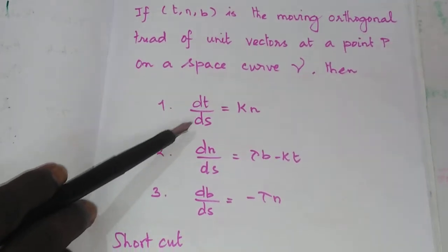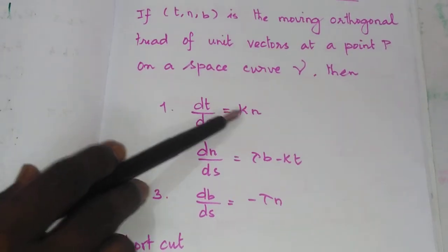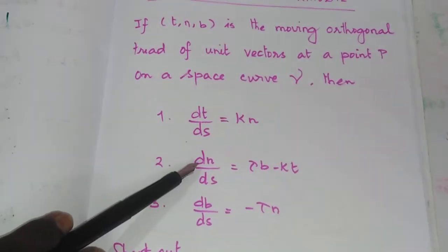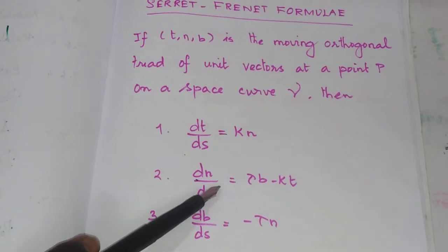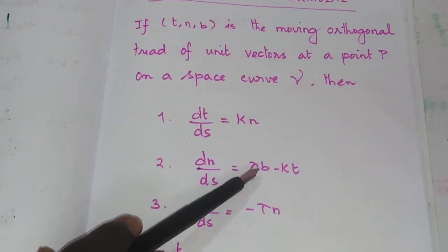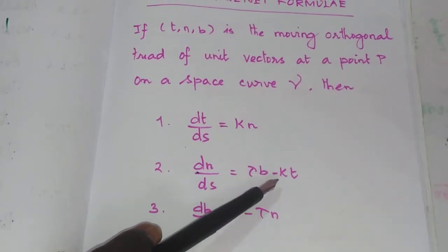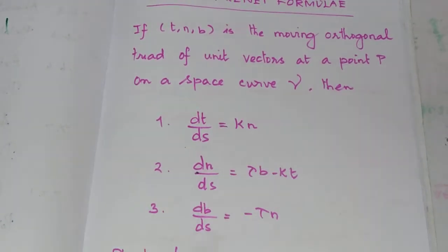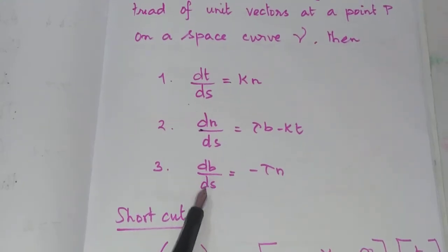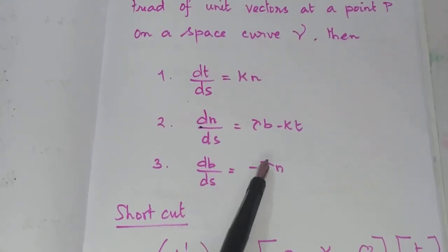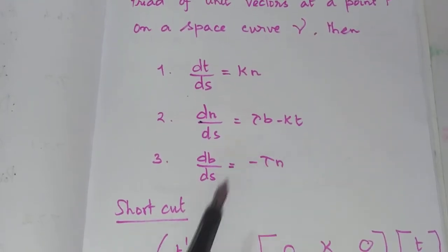dT by dS is equal to curvature times N. dN by dS is equal to torsion times B minus curvature times T. dB by dS is equal to minus torsion times N.